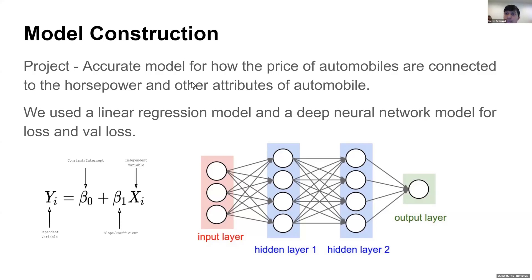First of all, before we start, we have to explain our project and the two models we decided to go with. There were some hints in the title screen, but basically our project is creating an accurate model for how the price of automobiles are connected to the horsepower and other attributes of these automobiles.